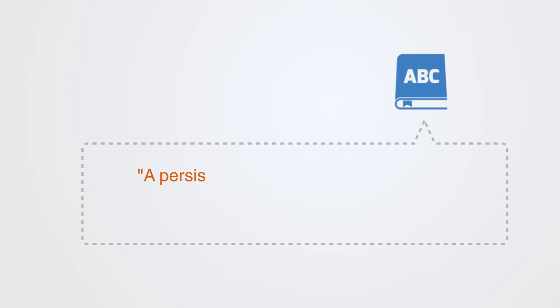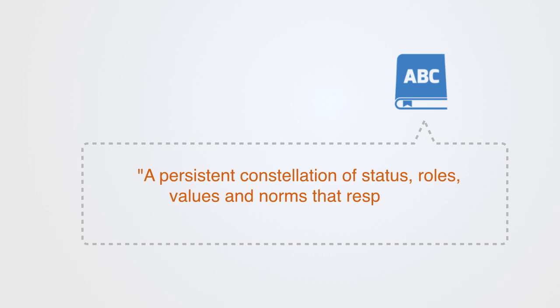Here's another widely used definition for social institutions as a persistent constellation of status, roles, values and norms that respond to important societal needs. This interpretation places emphasis on the idea of social needs and institutions as mechanisms for performing functions to solve those needs.